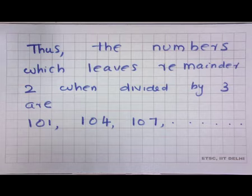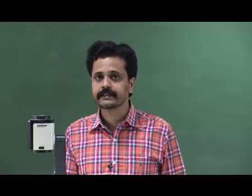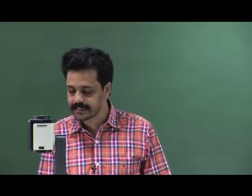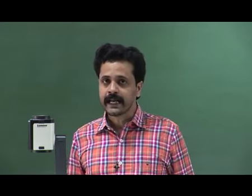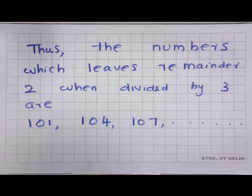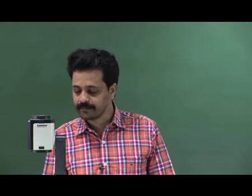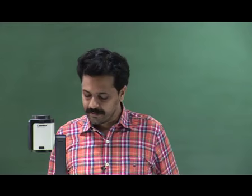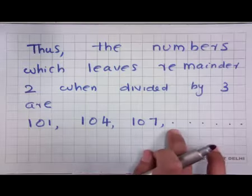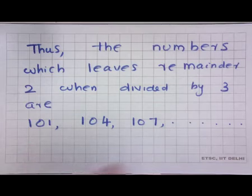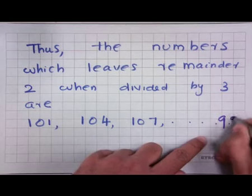Let us try to find the last three-digit number which leaves remainder 2 when divided by 3. Note that the highest three-digit number is 999, which is divisible by 3. So the preceding number, namely 998, will leave a remainder 2 when divided by 3. Therefore, the last number in this succession is 998.